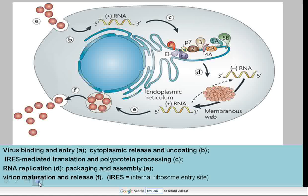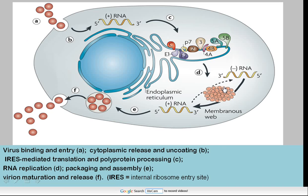This figure depicts the life cycle of the hepatitis C virus, starting with the virus binding and entry, then the cytoplasmic release and uncoating, the translation of the viral polyproteins at the internal ribosome entry sites, then RNA replication, packaging and assembly, and then maturation and release.